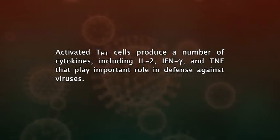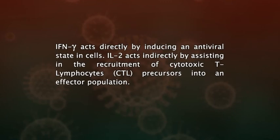Activated T helper cells produce a number of cytokines including interleukin-2, interferon-gamma, and TNF that play important roles in defense against viruses. Interferon-gamma acts directly by inducing an antiviral state in cells. Interleukin-2 acts indirectly by assisting in the recruitment of cytotoxic T lymphocytes, or CTL precursors, into an effector population.